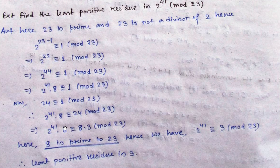So we will remove 8 from both sides, because 8 and 23 are prime to each other. If any number on both the left-hand side and right-hand side is prime to the modulus, we can neglect or cancel it. Removing the term 8, we are left with 2 to the power 41 congruent to 3 under modulo 23. So the residue, or remainder, is 3.